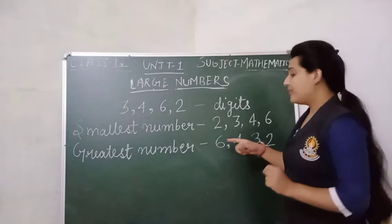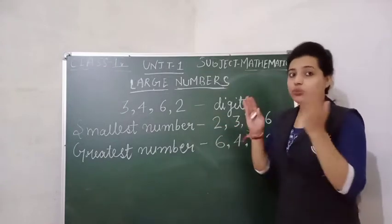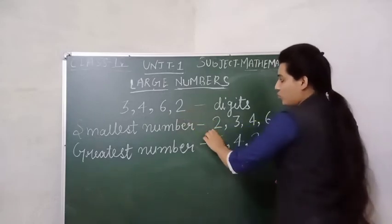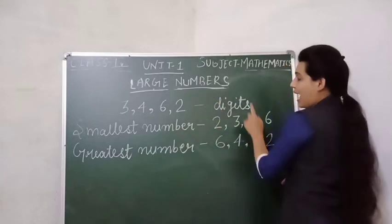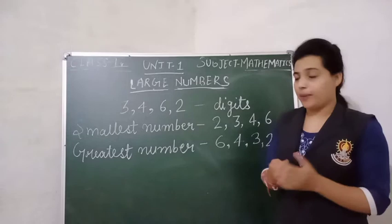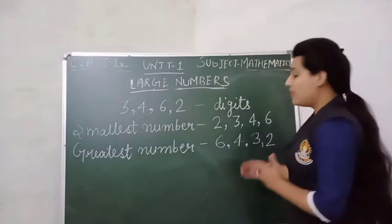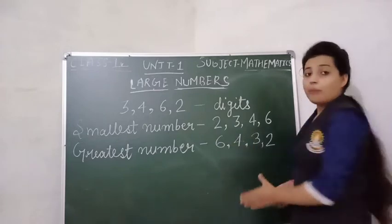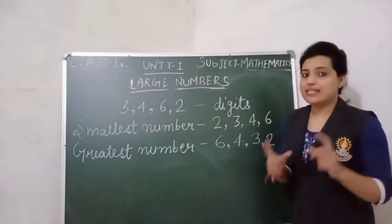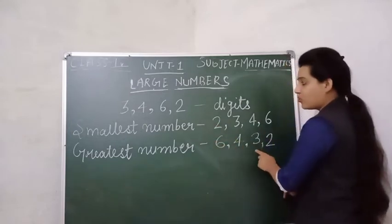For that, we will arrange the digits from smaller to larger. Here the smaller number is 2, then 3, then 4, and then 6—in ascending order. And for the greatest number, we will arrange from greatest to smallest in descending order: 6, 4, 3, 2.